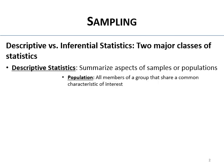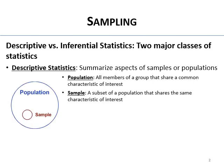What's a population? It's all members of a group that have some common characteristic of interest — for example, all homeless persons. A sample is a subset of that population that shares that same characteristic of interest, but it's a subset.